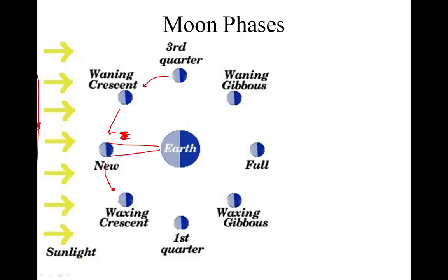Next, the moon is going to be cruising along this direction. The sun is lighting up this light blue part. We're still on Earth. Now, here are our sight lines — we're seeing a little tiny sliver of moon. So we're going to see a crescent of a moon.